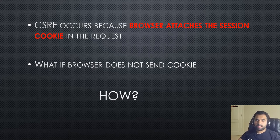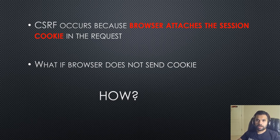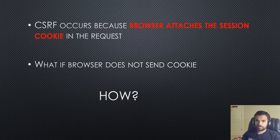Primarily, CSRF occurs when the browser attaches the session cookie in the request. If I send you a malicious request and you click on it — we've seen that before in a previous video where I explained how to exploit CSRF and also bypass anti-CSRF tokens using an Ajax request. The main reason behind CSRF is the browser attaches the session token, so there's no easy way for an application to know whether the request is coming from a legitimate user or an attacker.